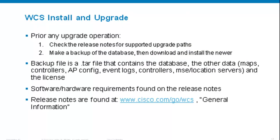Let's talk about installation and upgrade. Prior to any upgrade operation, there are two main things to do. First, check the documentation and release notes for your supported upgrade path — that will tell you what hardware and software is supported and how to upgrade WCS from one version to another. The second thing to do prior to any upgrade is to make a backup of your database.